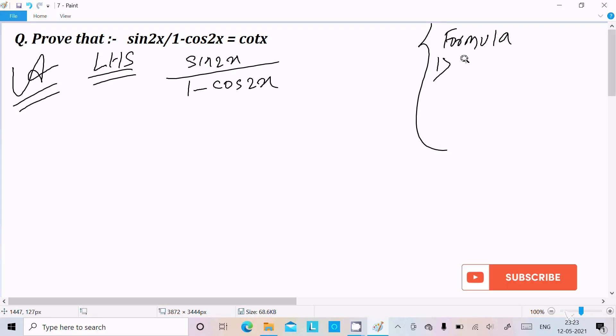The first one is sin2x, that is 2sinx into cosx. And another formula, that is for cos2x, that is we can write here 2cos²x-1 or 1-2sin²x or we can write cos²x-sin²x.